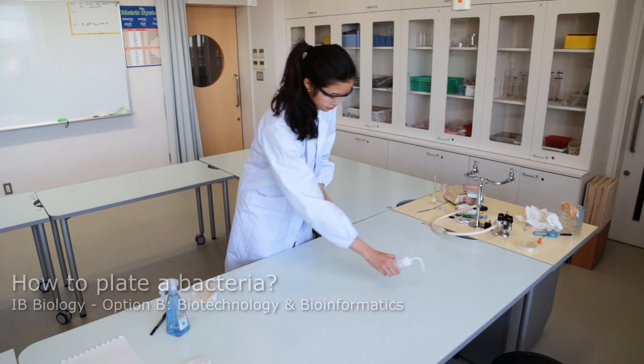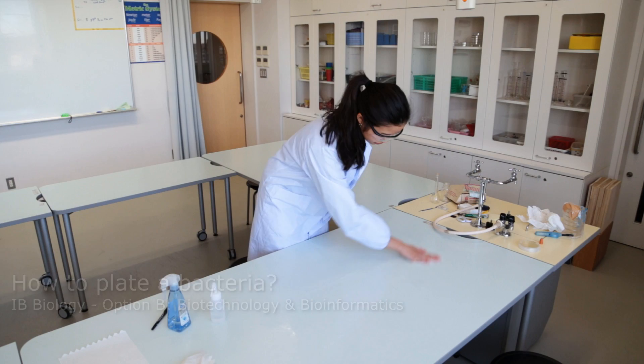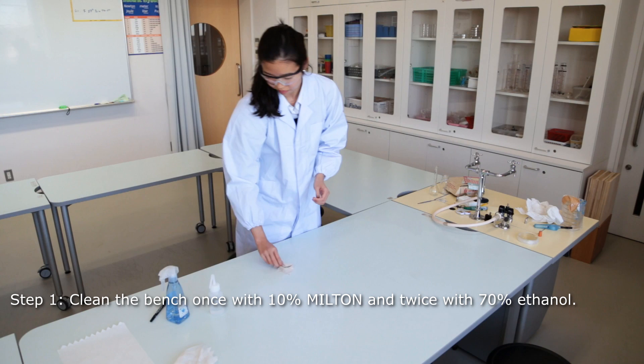Start by cleaning and sterilizing the workspace. Spray once with 10% Milton and wipe thoroughly using clean tissue paper. Repeat twice but with 70% ethanol.